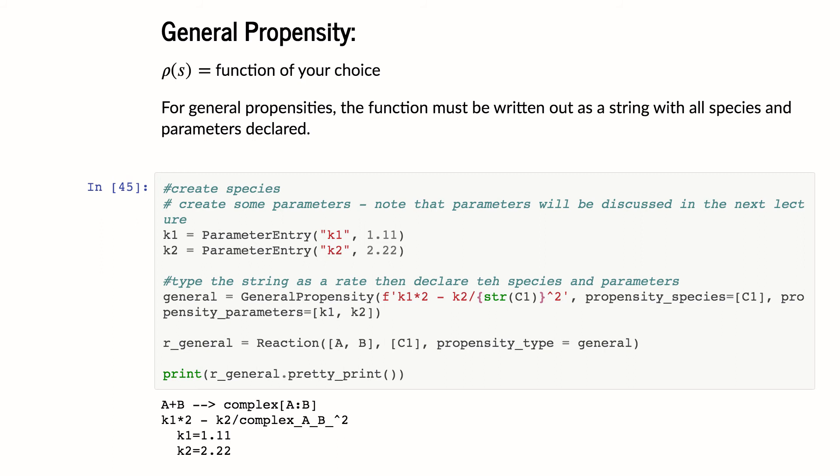Proportional hill negative. And finally, it's worth noting there's a general propensity type where you can type in any rate formula you want. So if you don't like the ones that we have built in, you want to invent your own new type of propensity function.